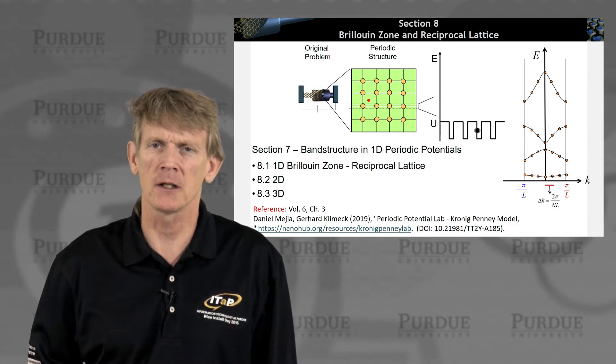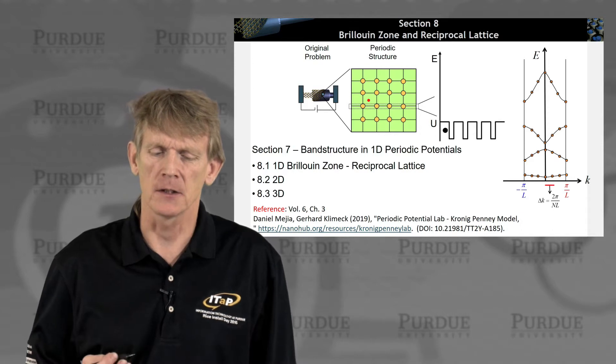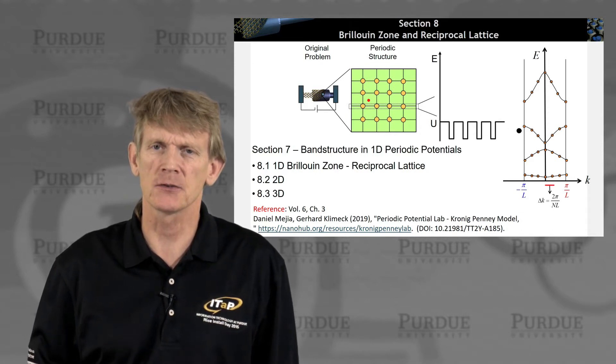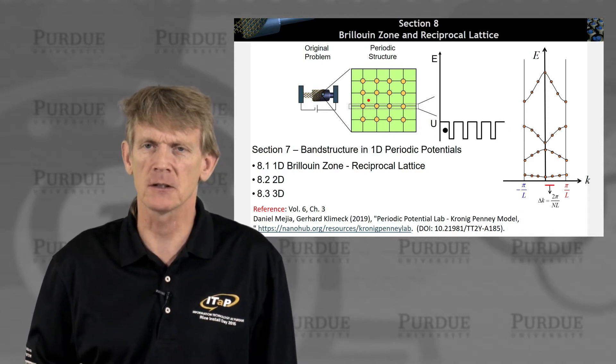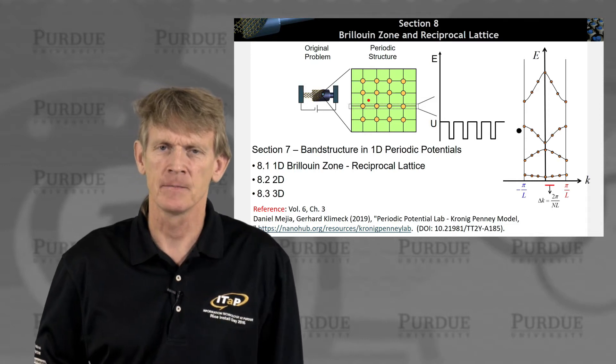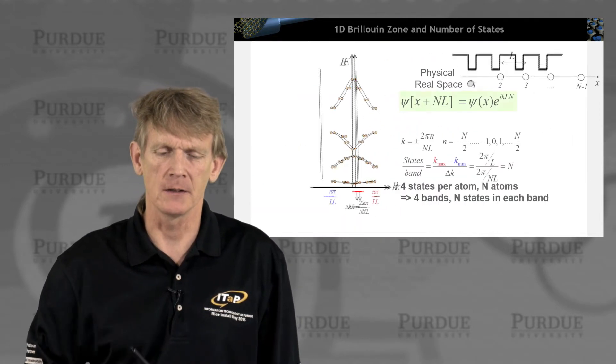What we did calculate is a Brillouin zone, sorry, a periodic potential structure where we have a band structure. We calculate multiple bands. And we'll explore that a little bit more now.